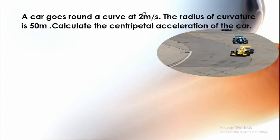A car moves around a curve at 20 meters per second. Radius is equal to 50 meters. We have to calculate the centripetal acceleration. Very simple.